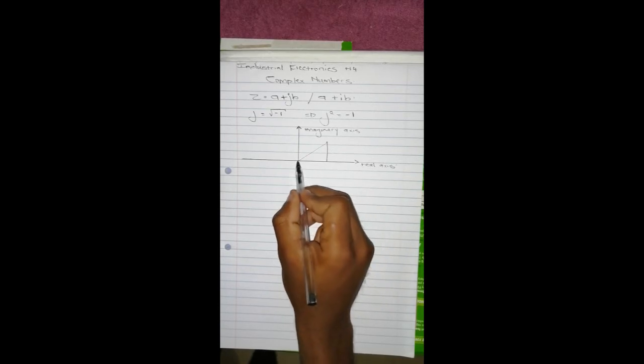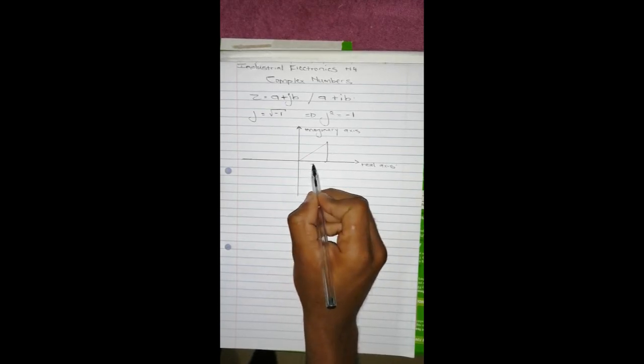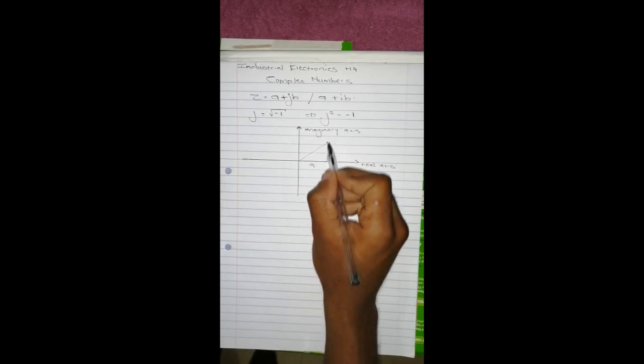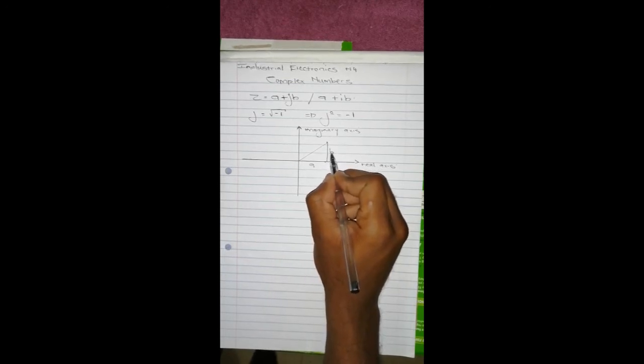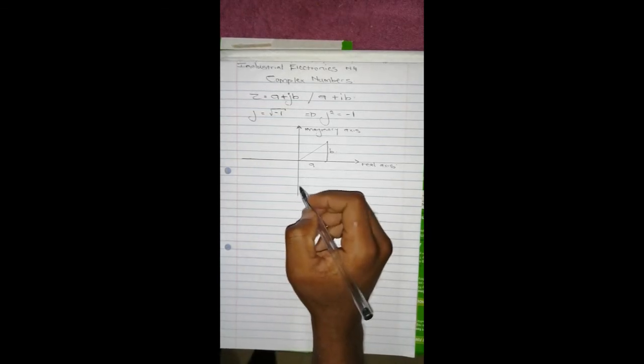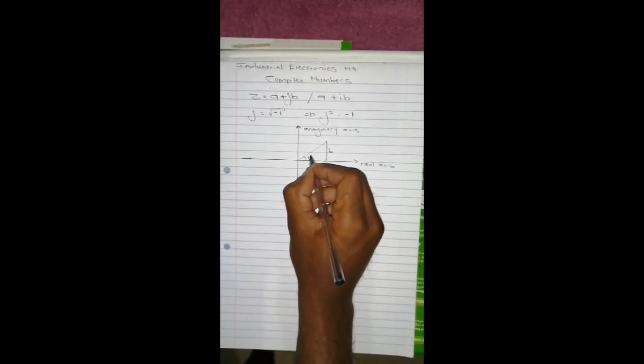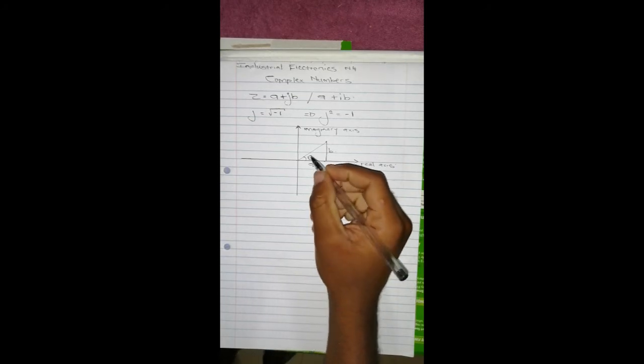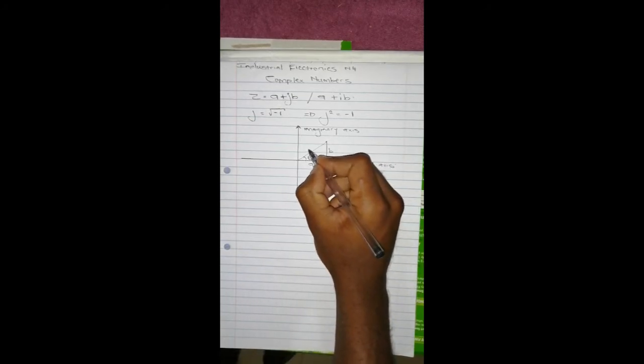And then to represent this you take, let's say, a point here. So you go that way 'a' units, so there is going to be 'a', and you go up 'b' units, there is going to be 'b'. And if you close this it creates a triangle which has an angle here, that's angle theta, and then you can call this 'r'.